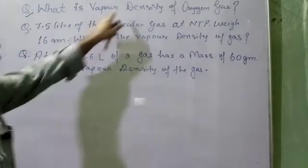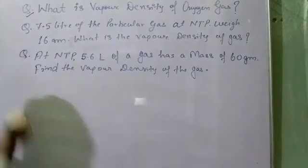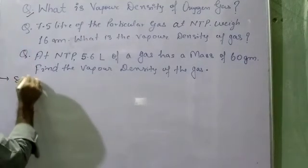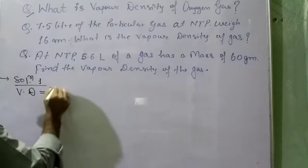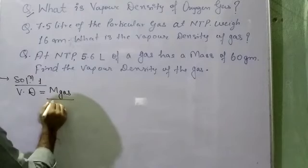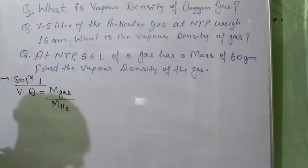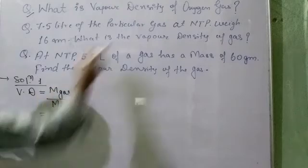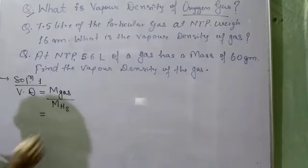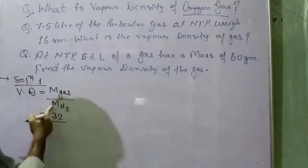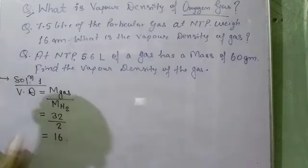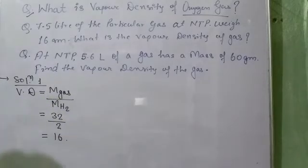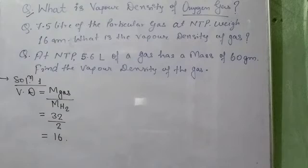Find out the vapor density of oxygen gas. Since we know vapor density equals to mass of the gas upon molar mass of H2. So the mass of the gas, that will be oxygen gas, will come 32 upon molar mass of H2 will be 2. So the vapor density of the oxygen gas will come out to be 16. This is the first question based on vapor density. It is a very simple question.